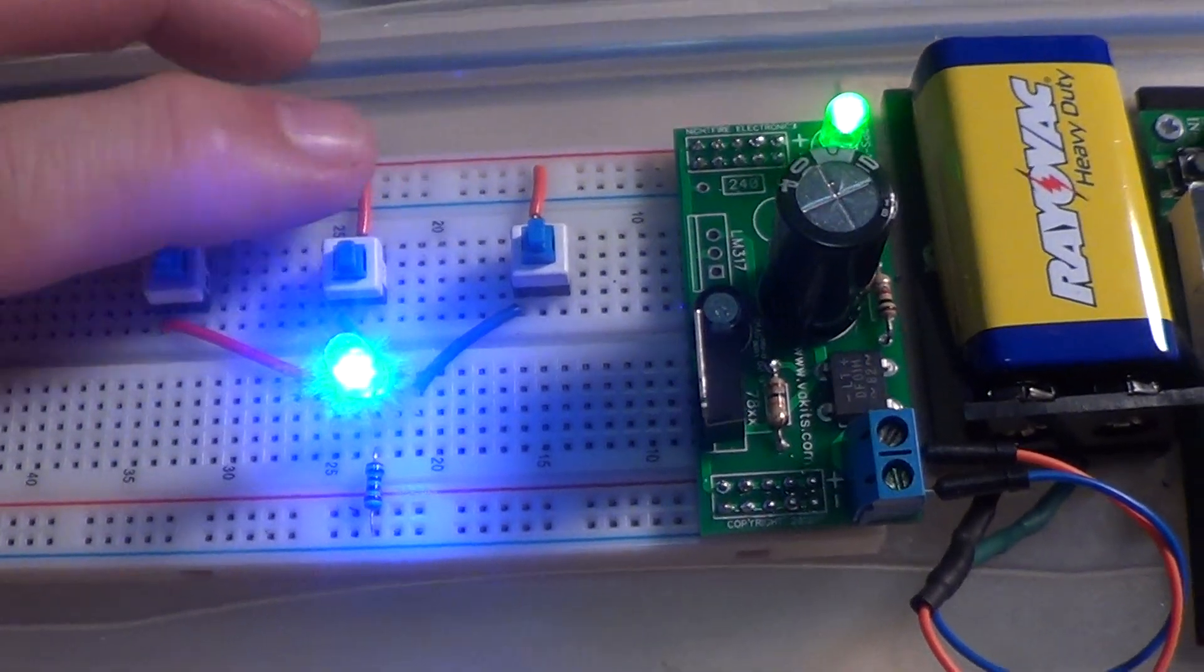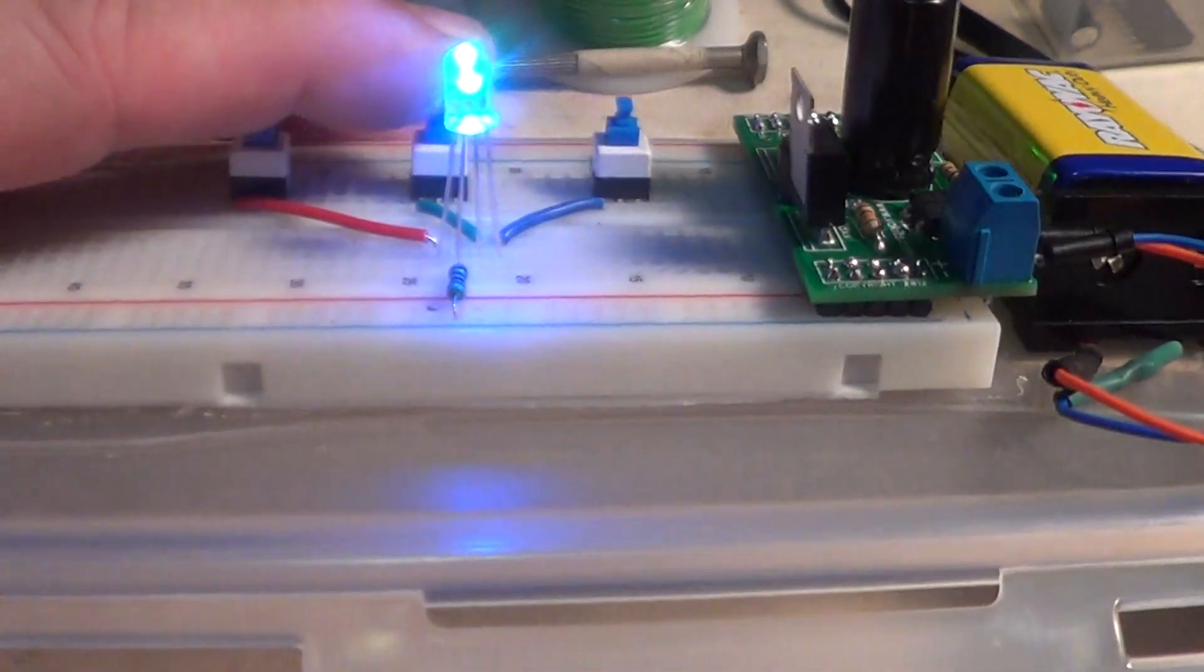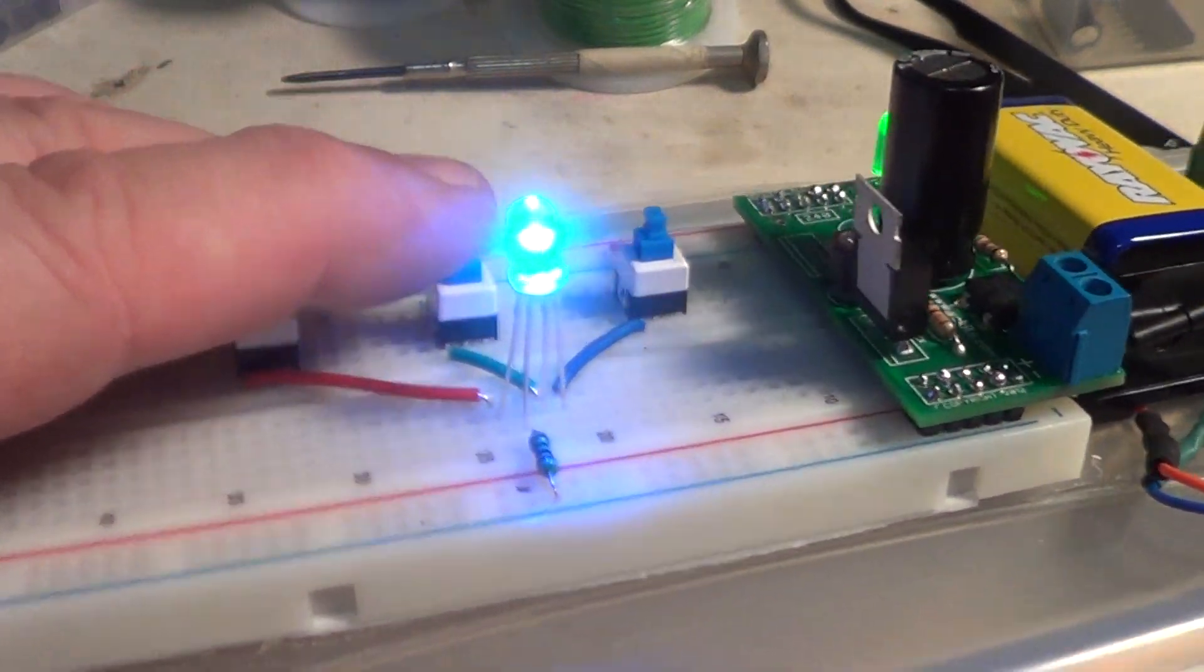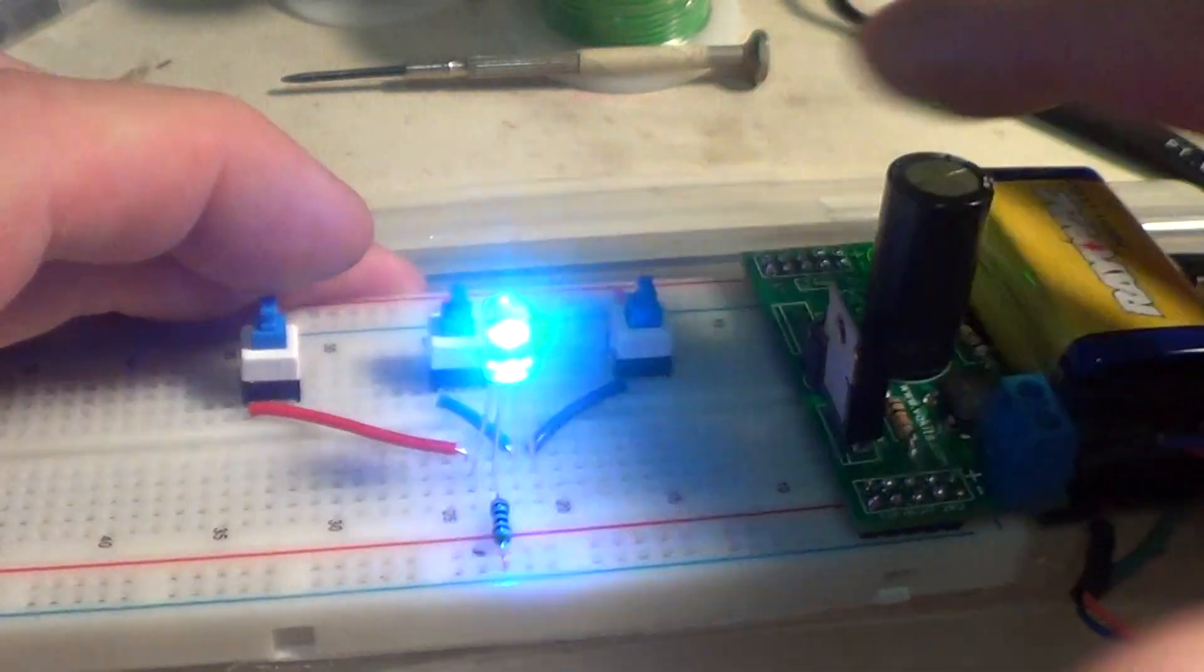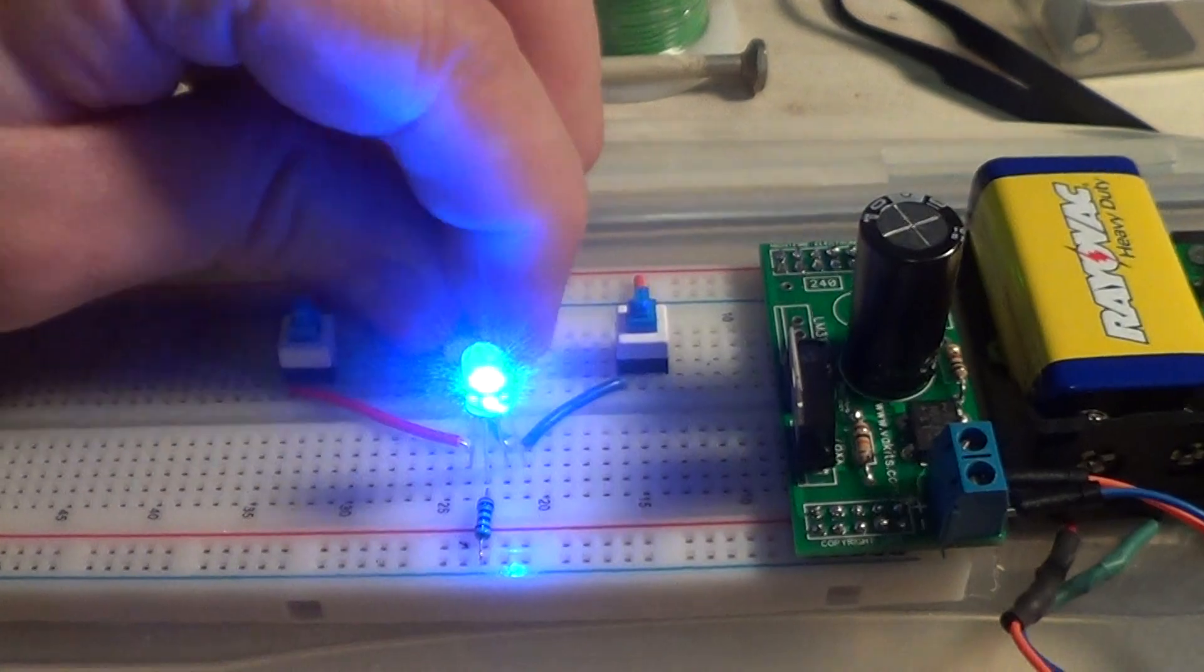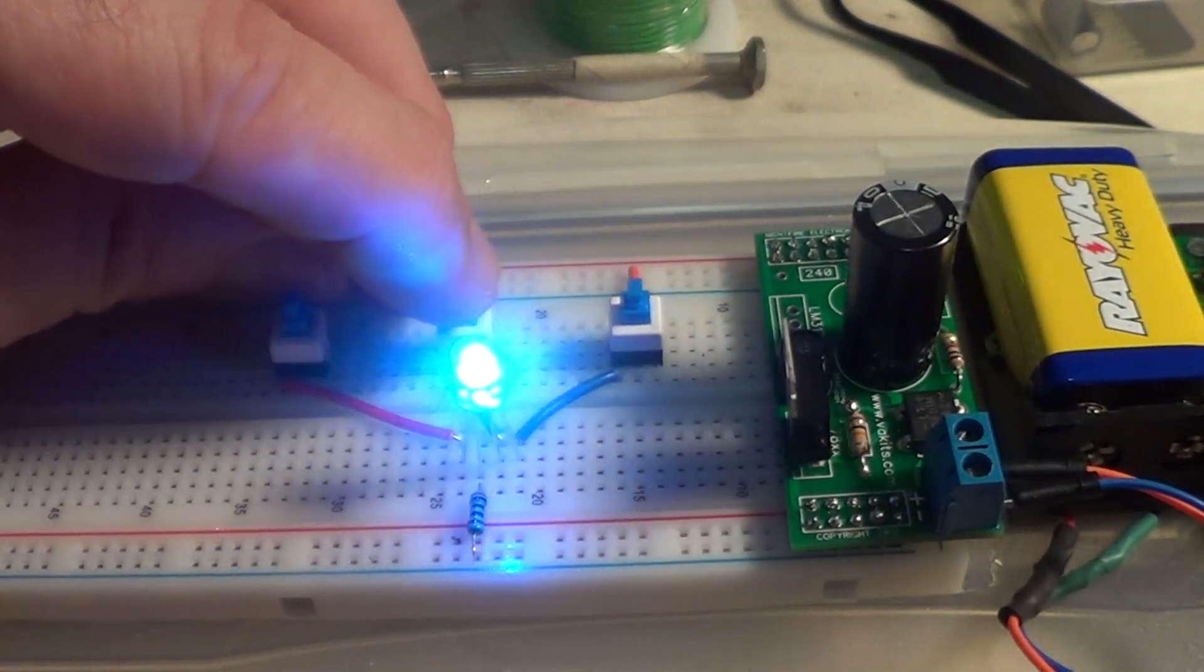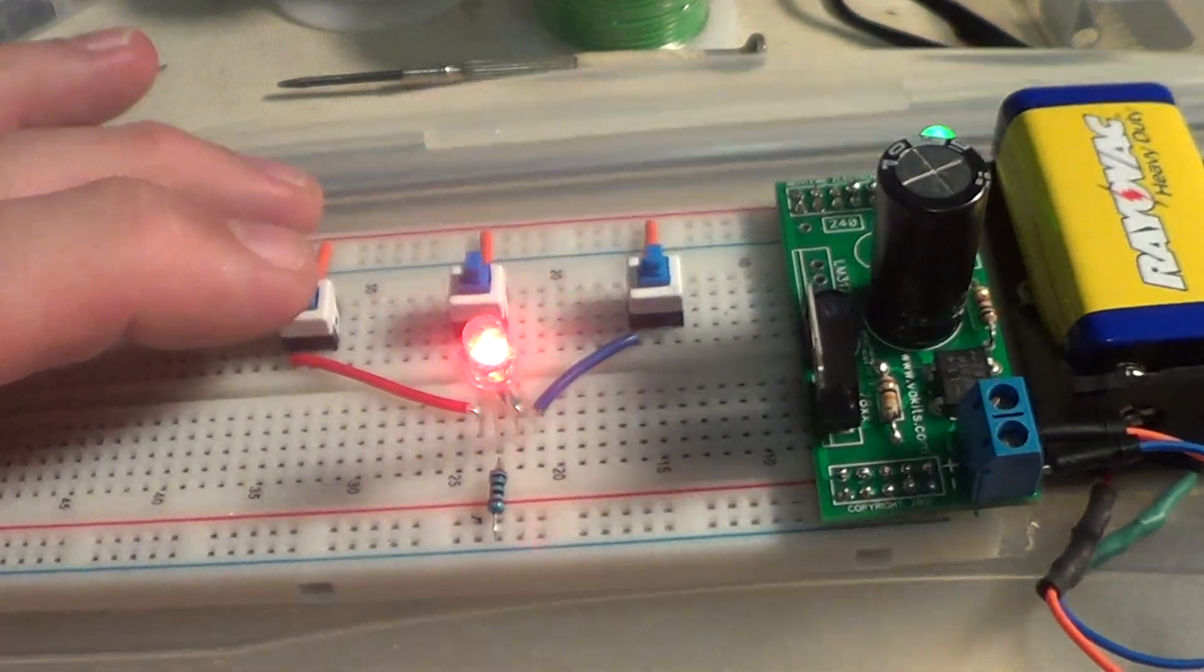So I can turn on the green light also. Hard to see but I can get blue and green at the same time. That's green. And the red one, that's red.